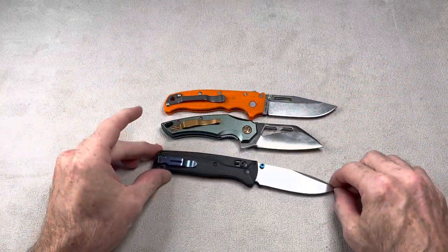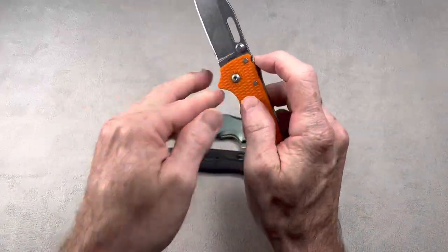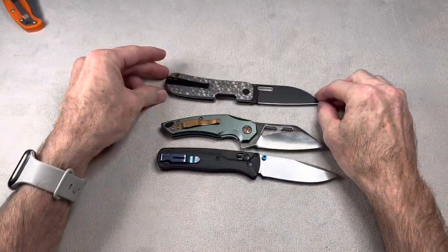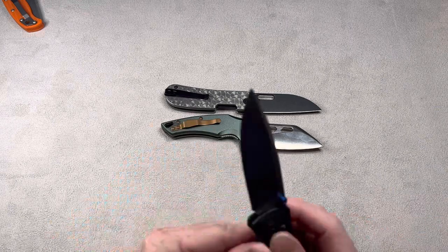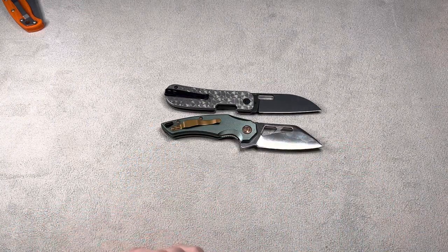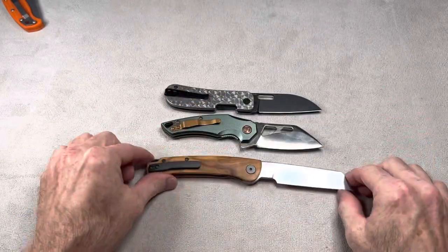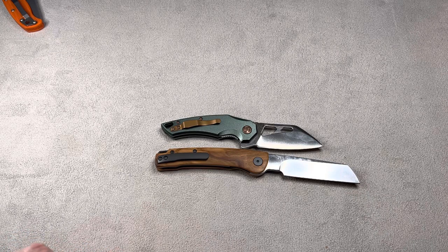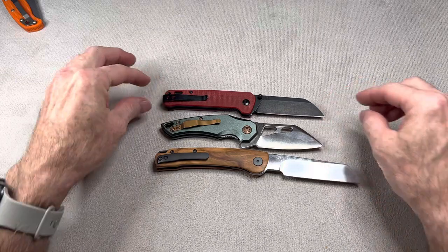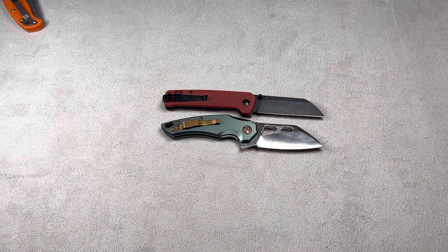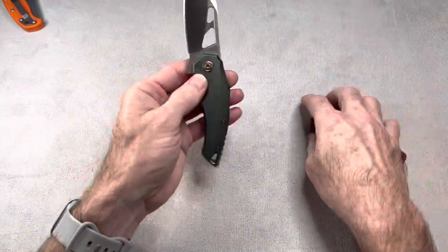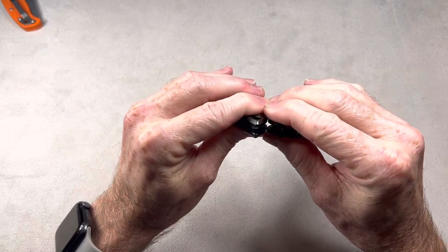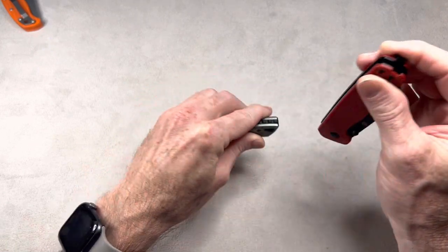Here's a Benchmade Bugout. Here's a Civivi Blade Works Variant PE2. Petrified Fish Scholar. And we'll go ahead and do the penguin, the QSP Penguin. So that should give you a good idea on size. As far as thickness goes, it's extremely similar to a Penguin, almost identical I think. Yeah actually it's slightly thicker, maybe a millimeter thicker than a Penguin, a liner lock Penguin that is.